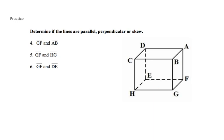Determine if the lines are parallel, perpendicular, or skew. GF and AB — they are up and down from each other. They'll never intersect, so they are parallel.